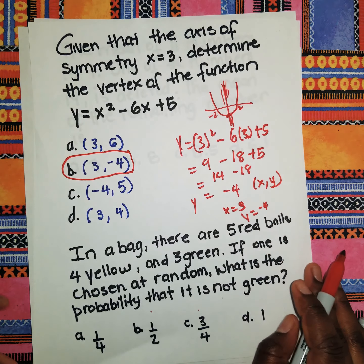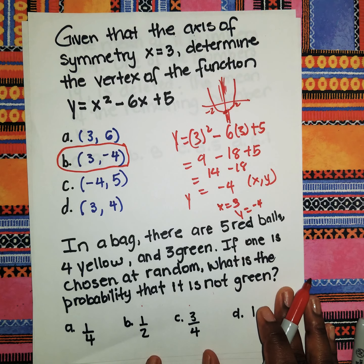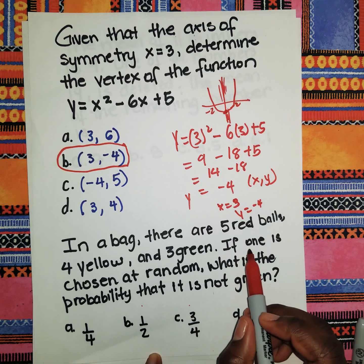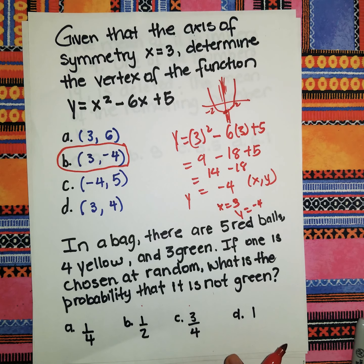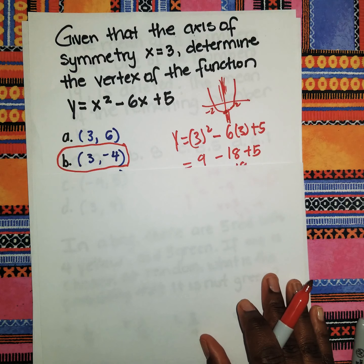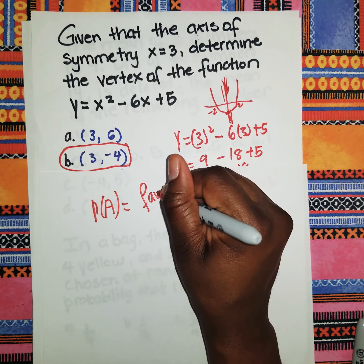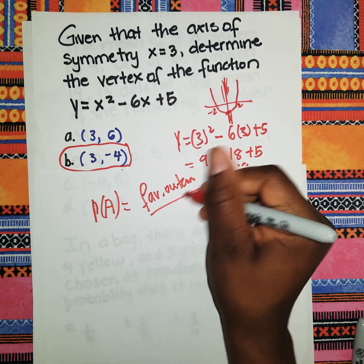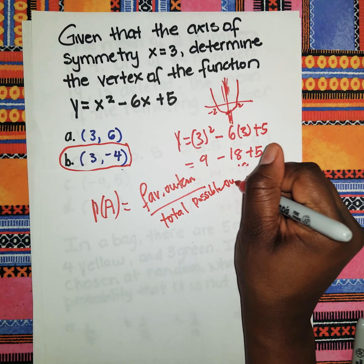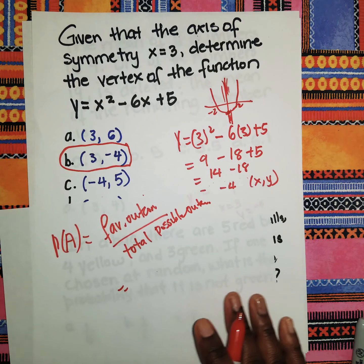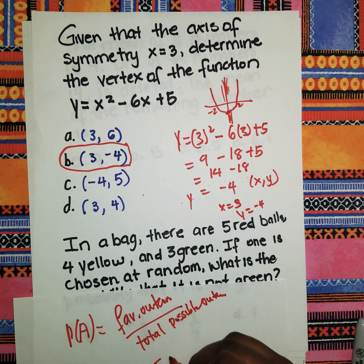Alright, next question: in a bag there are five red marbles, four yellow marbles, and three green balls. If one is drawn at random, what is the probability that it is not green? We know that probability of any event = favorable outcomes ÷ total possible outcomes, also called the sample space.